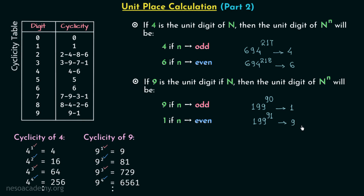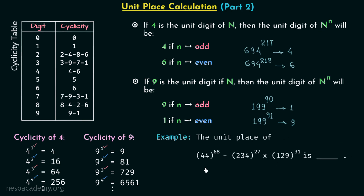Before we end this lecture, let's see one example problem. We are required to find out the unit digit of 44 raised to power 68, minus 234 raised to power 27, multiplied with 129 raised to power 31. We will find out the digit at unit place for the three powers independently. For 44 raised to power 68: four is at the unit place of 44, so we use this rule. The power is 68, which is even, so 6 is going to be the digit at unit place.